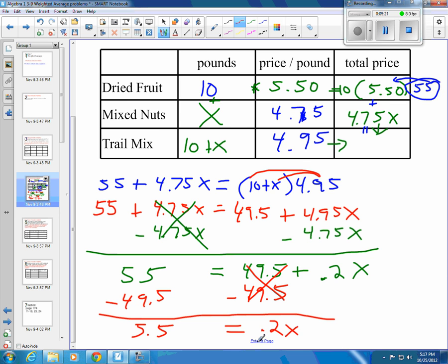We all know that 0.2 is actually 1 fifth, so I could just multiply both sides by 5. Or, if you don't like doing that, you can do the opposite of multiplying by 0.2 by dividing by 0.2 on both sides. 5.5 divided by 0.2 or 5.5 times 5 either one gives you 27.5 as X. Now we know what X is.